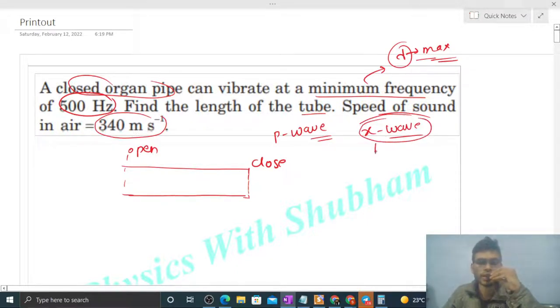And what is the length of half loop? That is lambda by 4, right? So lambda by 4 will be the length of the tube. So from here, see what the wavelength will be - 4 times L.